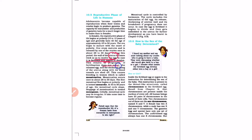If fertilization does not occur, the egg is released and the thickened lining of the uterus along with the blood vessels is shed off. This causes bleeding in women, which is known as menstruation. Every month the uterus thickens waiting for fertilization, and when pregnancy does not occur, the thick lining and blood vessels are shed off in the form of bleeding — that is menstruation.